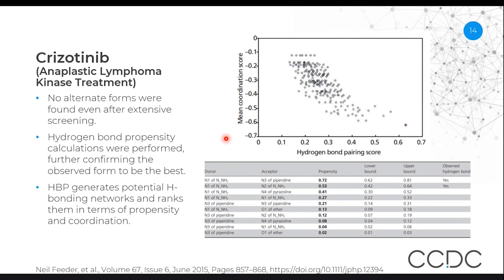Without going into too much technical detail, compounds which are found in the bottom right of this chart score very well in terms of both propensity and coordination. In this case, the observed form was found as the bottom-rightmost compound, suggesting that this compound is in its most stable form. And that agreed very well with what was seen experimentally in terms of solvent screenings for alternative polymorphs.